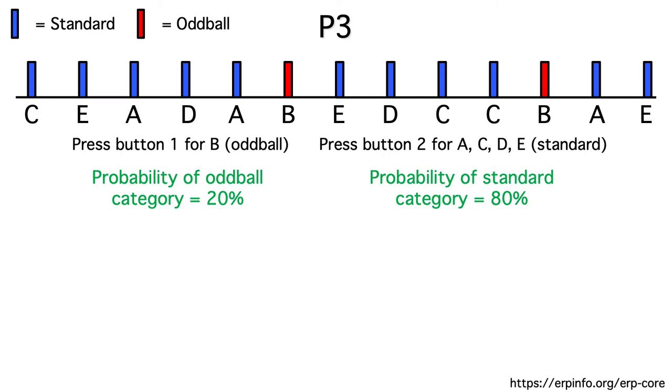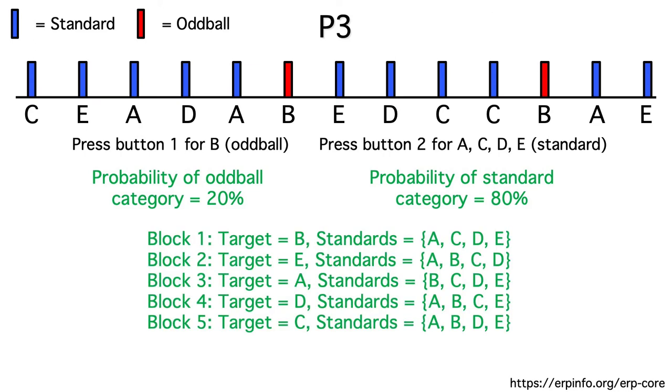We should therefore get a bigger P3 for B's than for the other letters. This is how the P3 task in the ERP core works, except that B wasn't always the target letter. A different letter was defined as the oddball for each block of trials.